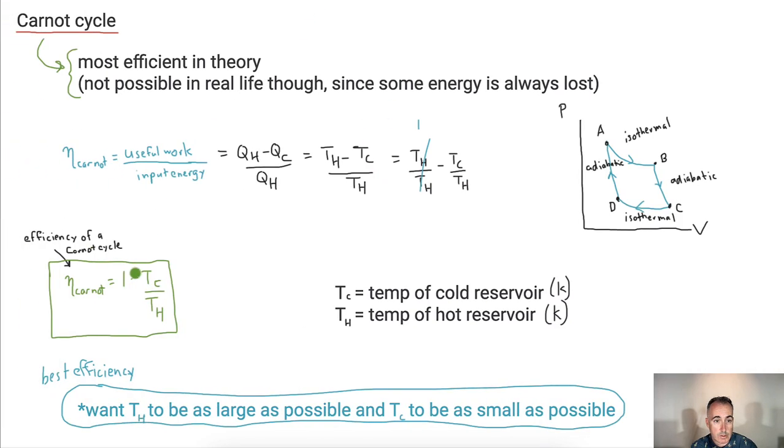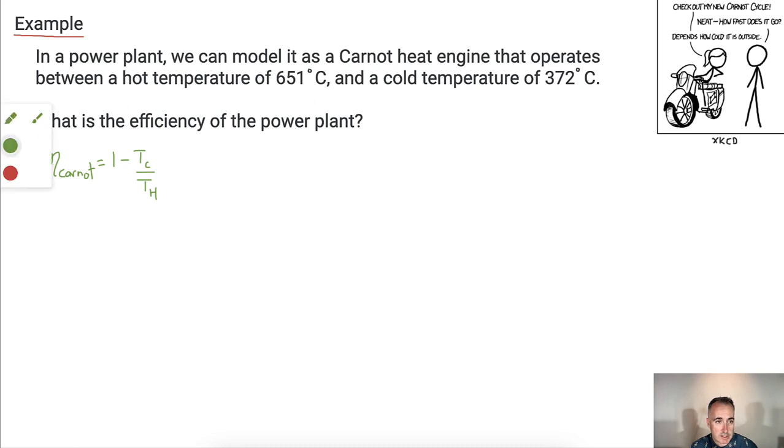Well, then all we need to know then is just what is TC. But keep in mind, we need them not in Celsius. We need them in Kelvin. So TC in Kelvin, what's that going to be? Well, it's going to be 372. That's the cold temperature in Celsius. We're going to add that to 273. So that's going to be, what is that? 645 Kelvin. And then for the T hot in Kelvin, what's that going to be? It's going to be 651 plus 273, which is, what's that? 924 Kelvin.